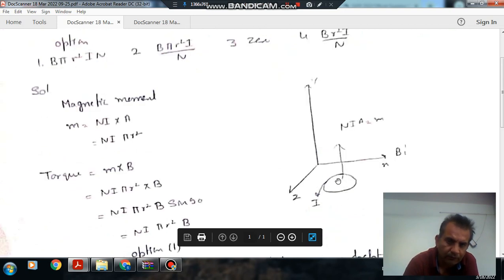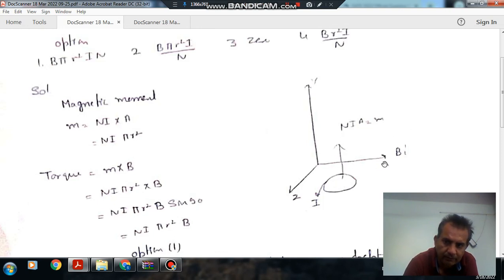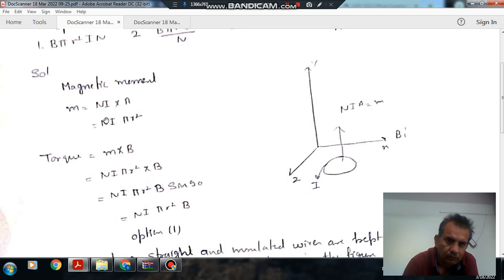So this is your XZ plane and it is carrying current i. If N is the number of turns then the magnetic moment NIA is in this direction. The magnetic field B is in the Y direction. Area is πR², so magnetic moment is N·i·πR².